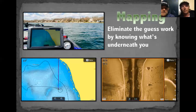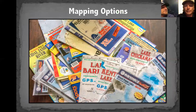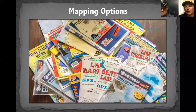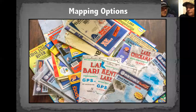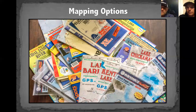Mapping options have come a long way. I'm still a big fan of a paper map — there's just something about it. You can see the big picture a lot better. I recommend getting a paper map for every place you go and use it along with your mapping cards. It gives you a bigger picture of the whole lake versus on your map card, where you're typically looking at pretty small sections.